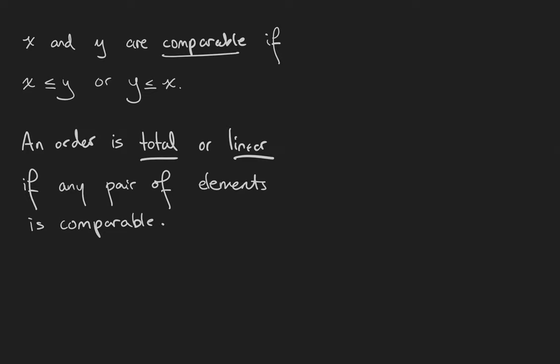Remember that anytime we say less than or equal to, we're not talking about numbers, we're talking about some known partial order. x and y are comparable in the order if x is less than or equal to y or y is less than or equal to x.